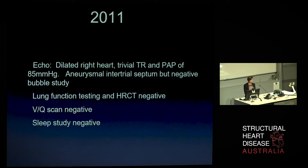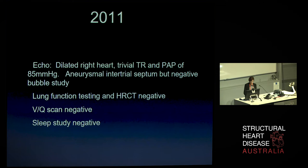She had lung function testing performed — she had a history of heavy smoking — and that was normal. She had a high-resolution CT scan performed, which was also normal. She had a VQ scan performed to look for any evidence of pulmonary thromboembolism, which was negative, and she had sleep studies performed looking for sleep apnea, and they were normal.